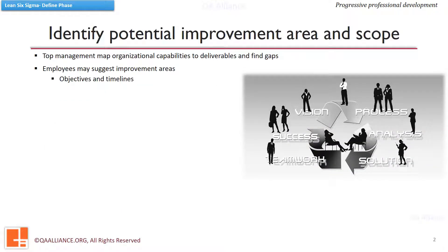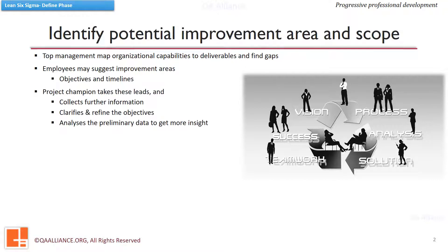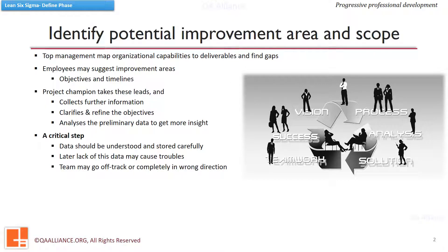To identify potential improvement areas, the executive leadership may drive a gap analysis by mapping organizational capabilities with the deliverables. Employees also suggest areas of improvement with respect to time, quality, scope, and how difficult it is to meet the objectives. Once gaps are collected, the project champion digs out further information, clarifies and refines objectives based on the findings and facts. A very important thing here is that this data should be stored carefully and should also be fully understood. If not, it may cause the team to go off track later.